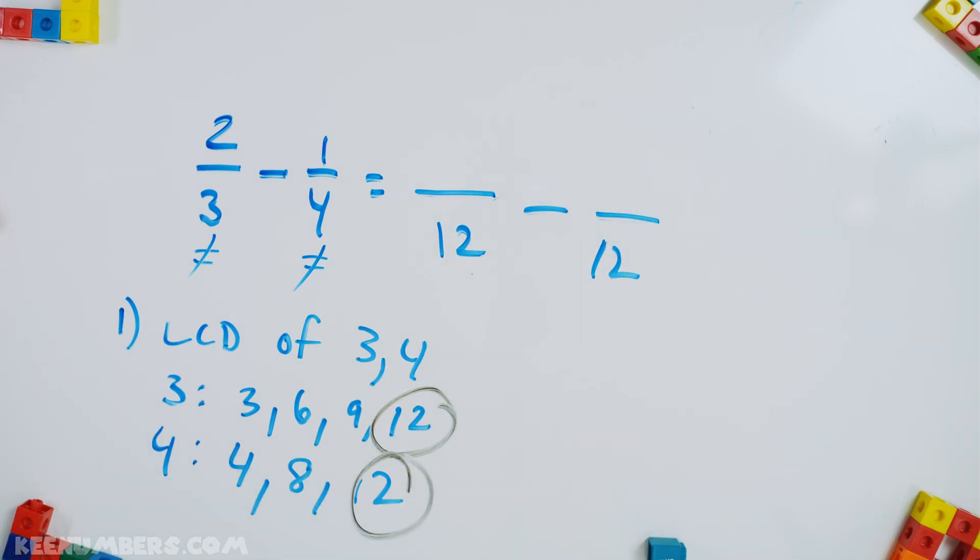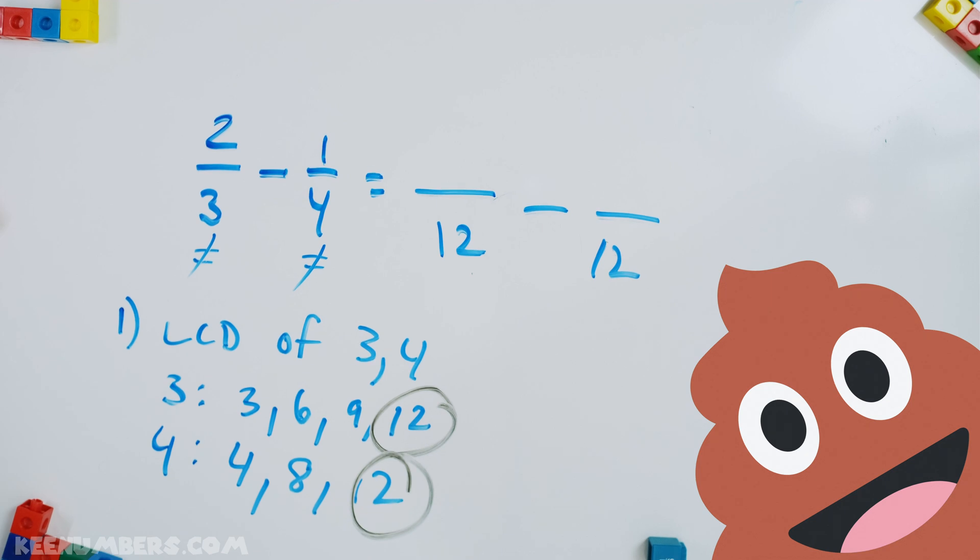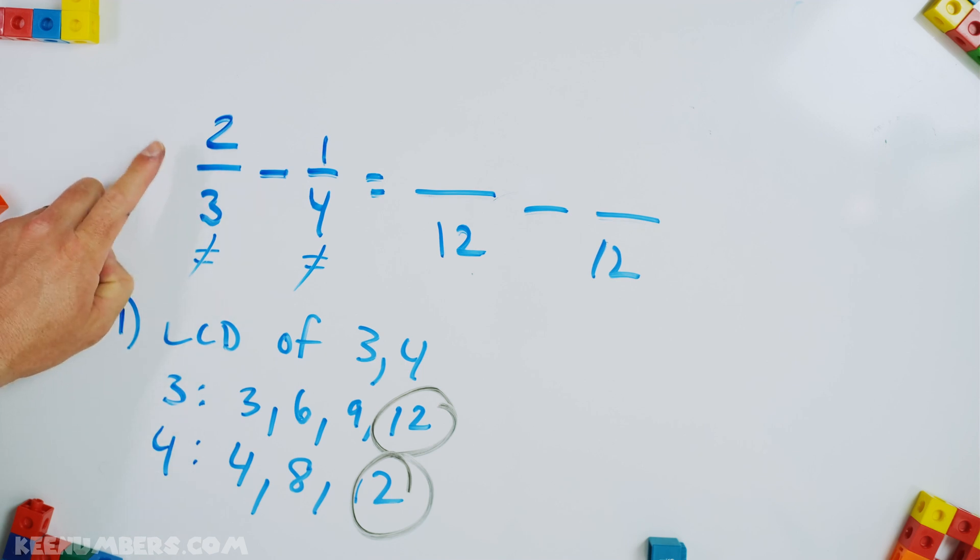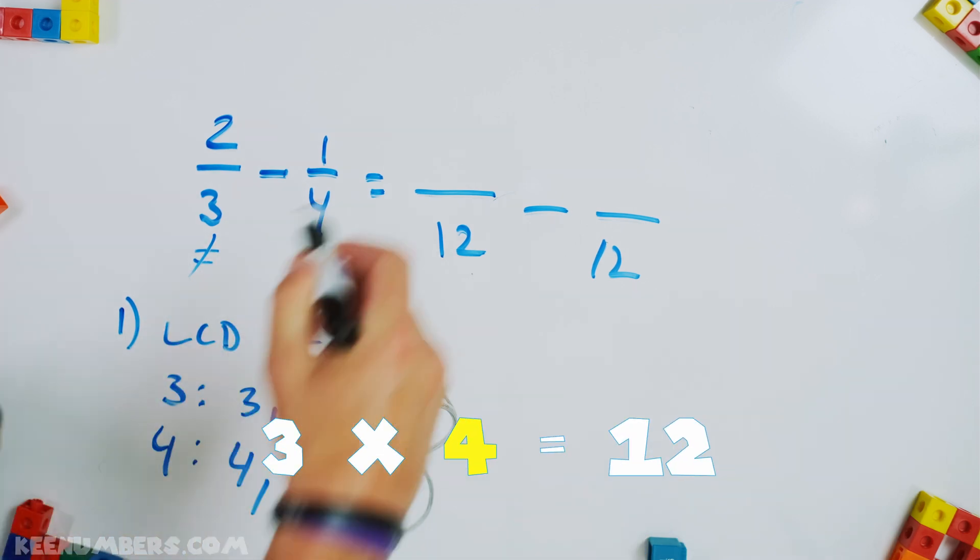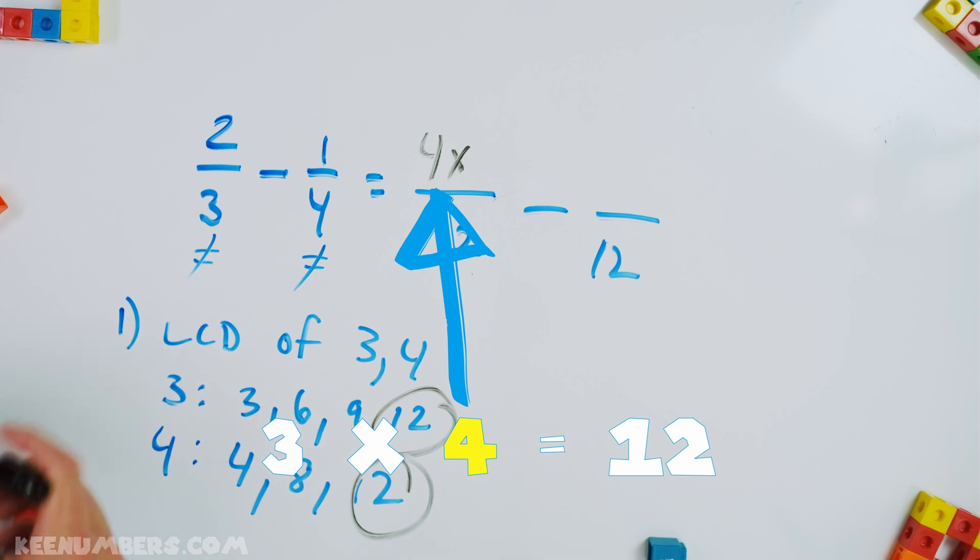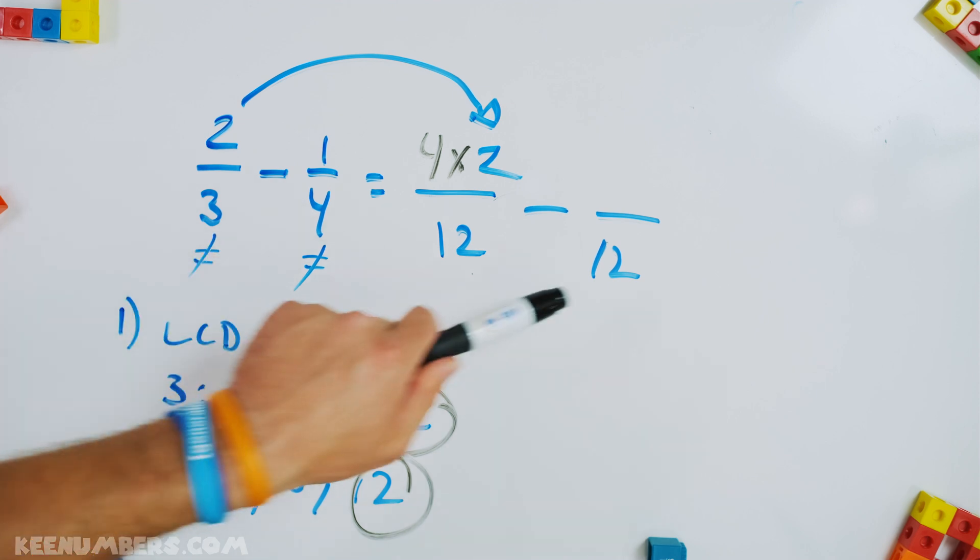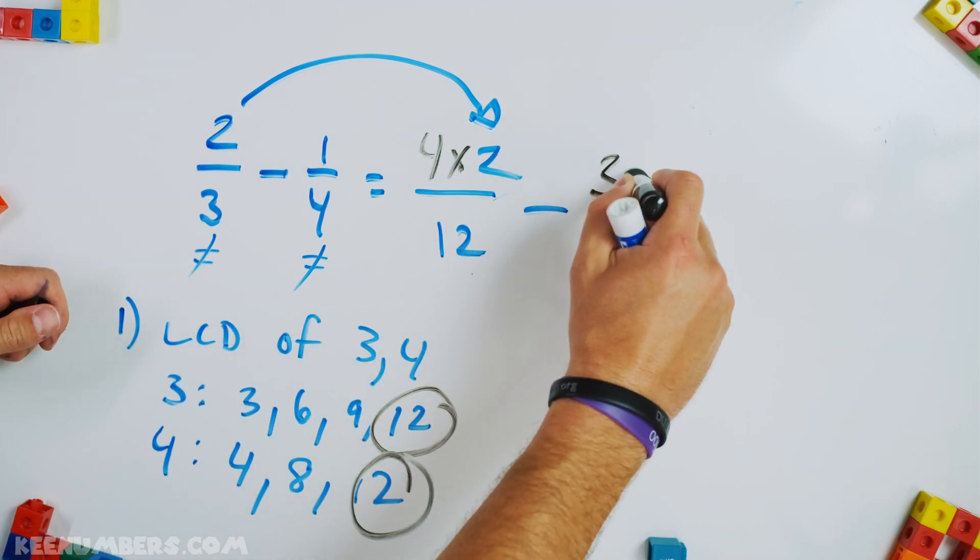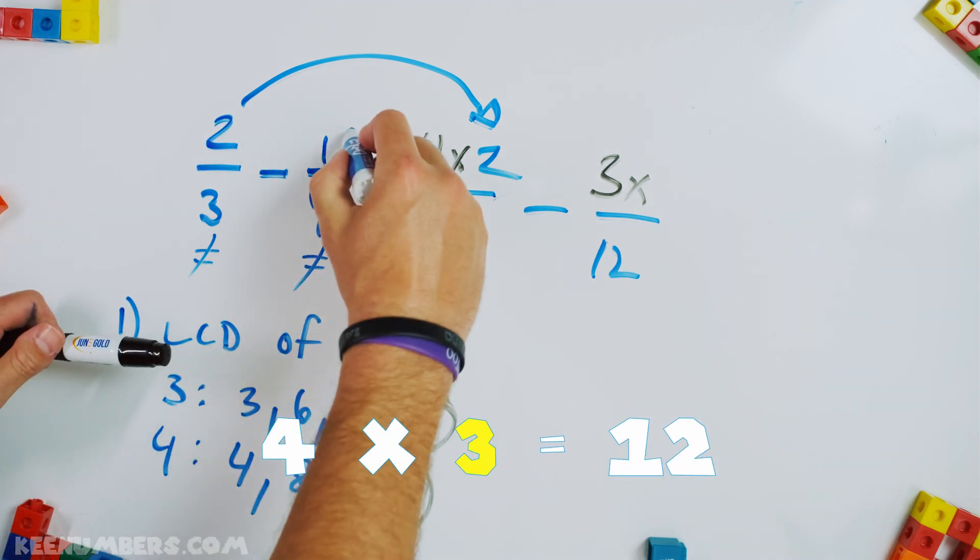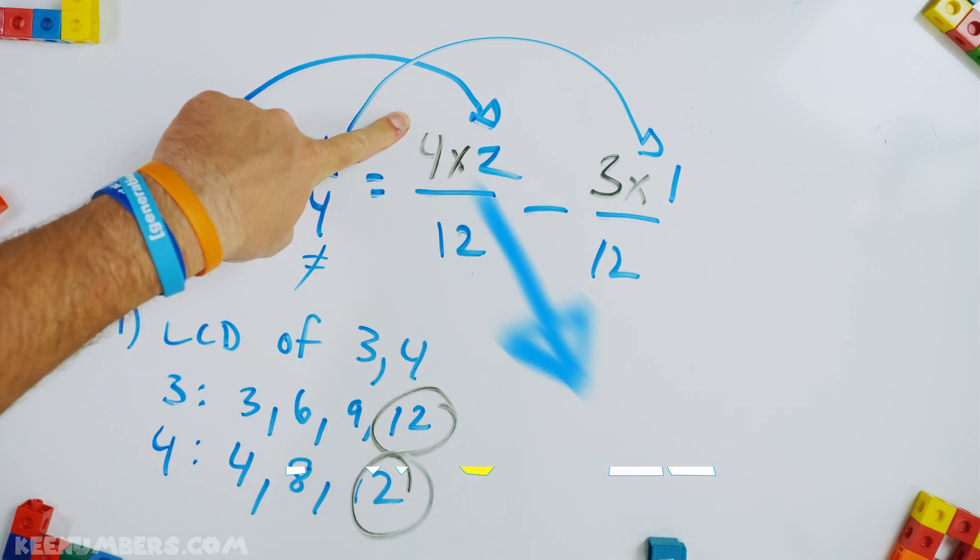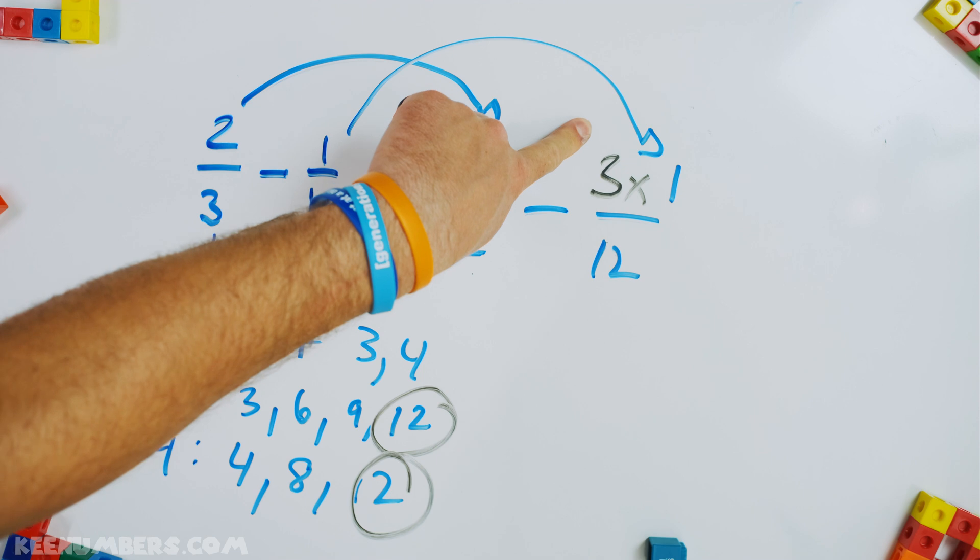So we have 12ths that we are subtracting now. How many 12ths are two thirds? Hezzy's going to get the blocks for us and help us see what's going on. Three goes into 12 four times. So you're going to multiply the numerator here, two by four. And then four goes into 12 three times. So you're going to multiply the numerator one here by three. You are multiplying. You're getting eight and then you're multiplying and you're getting three.